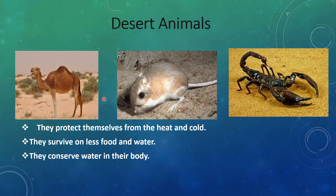Most desert animals are very small in size. It is very hot during the day, so some birds and reptiles are active only during dawn and dusk. Many animals such as the desert rat restrict all their activity to the cooler temperatures of the night. They sleep in a cool den, cave, or burrow during the day.